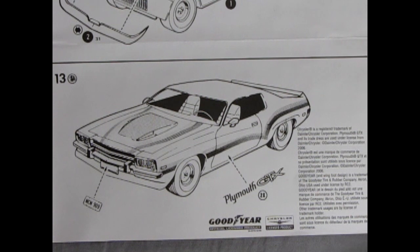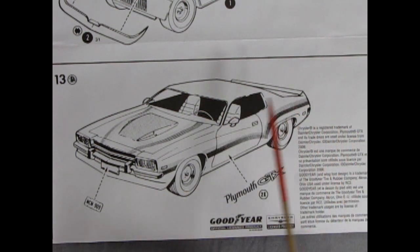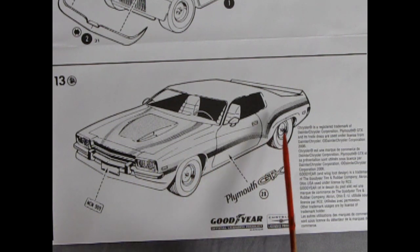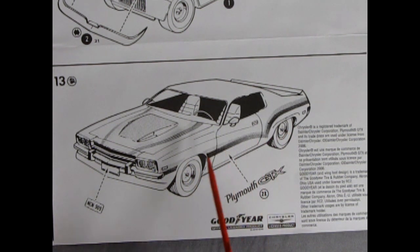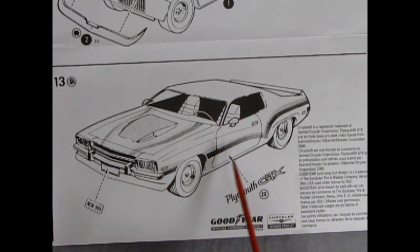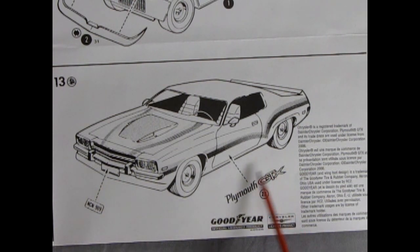Step 13 is our final assembly step which shows our decal location and these are not the actual Plymouth GTX decals which you saw on the box top. These are from a 1980s street machine and well they look very 80s for sure. And there's our front license plate going in place as well as the Plymouth GTX on the side.